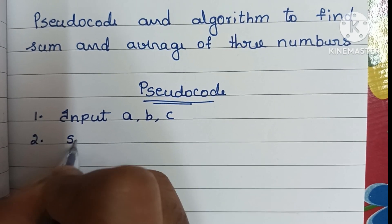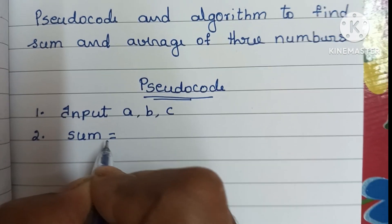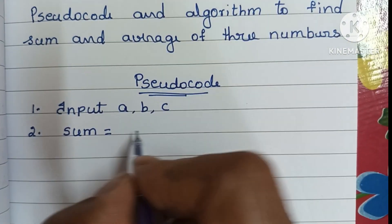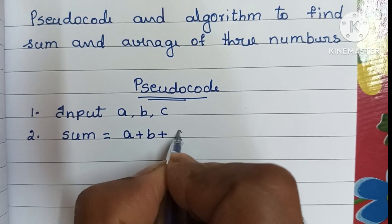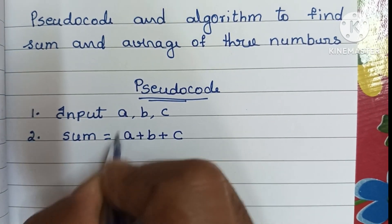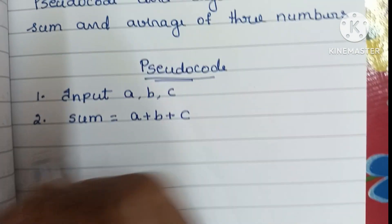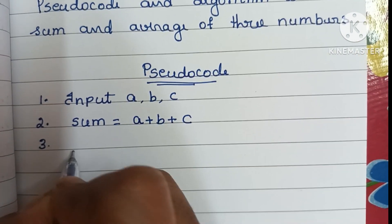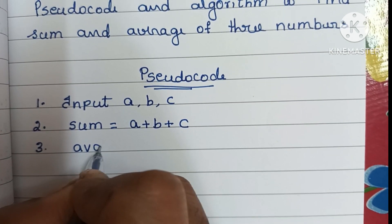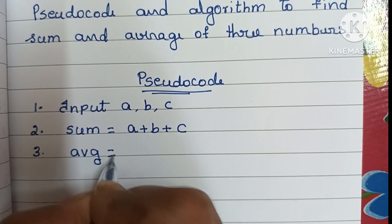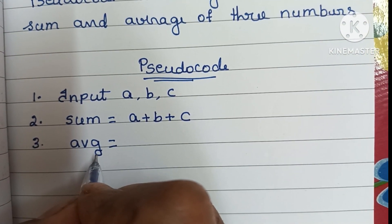Next we have to calculate sum. To find sum, that is a plus b plus c — we have to add three numbers. In step three, we have to find the average of three numbers.